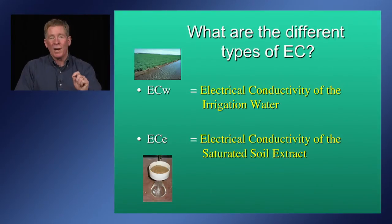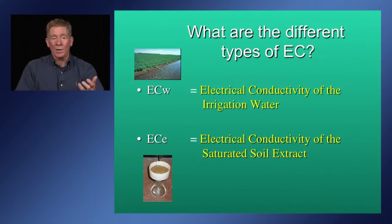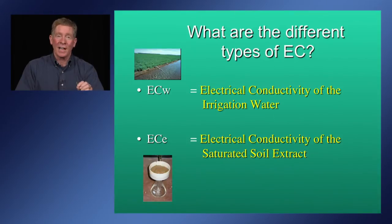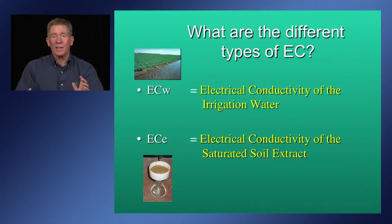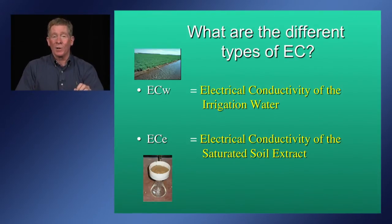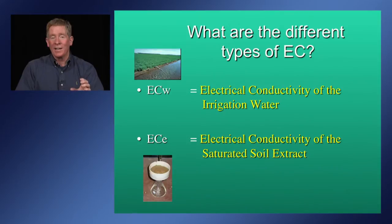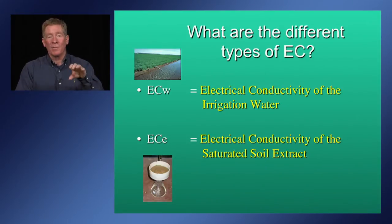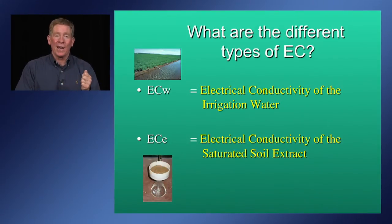It's important to distinguish between the EC of the water and the ECe, which characterizes the electrical conductivity of the saturated soil extract. This distinction matters because all of our crop science literature on crop salt tolerance is defined based on the ECe value — the average root zone salinity expressed as a saturated soil extract. Soil samples are collected from the field at various depths and times to characterize the active root system and brought back to the laboratory.